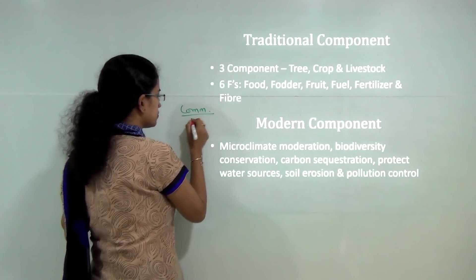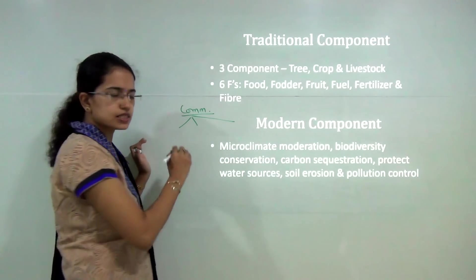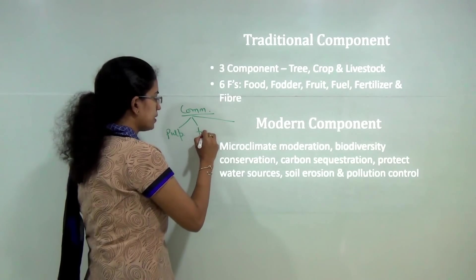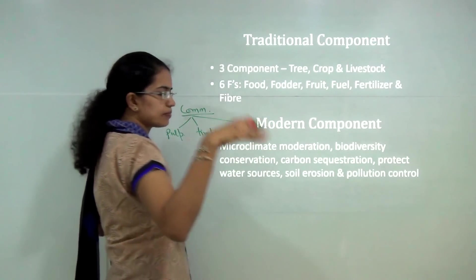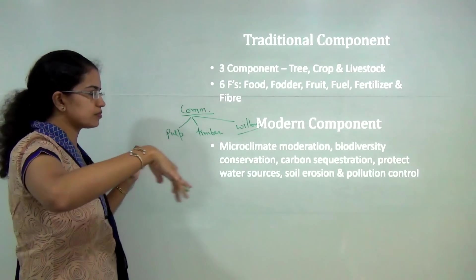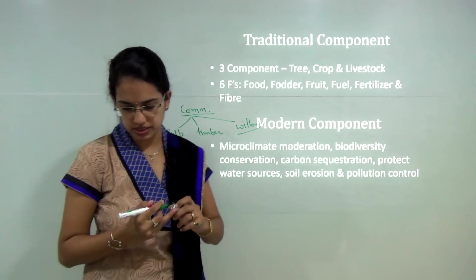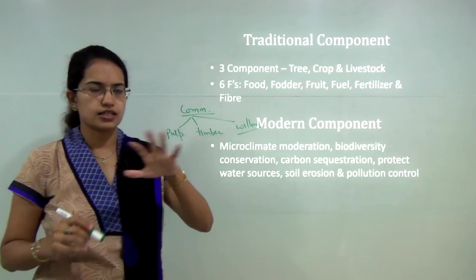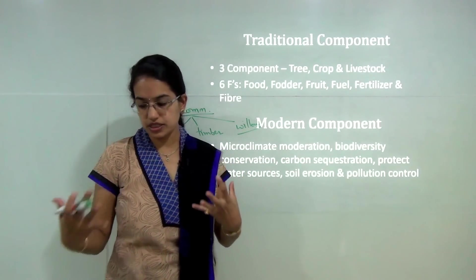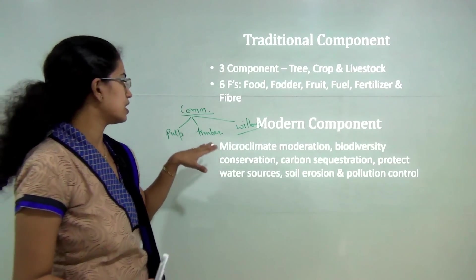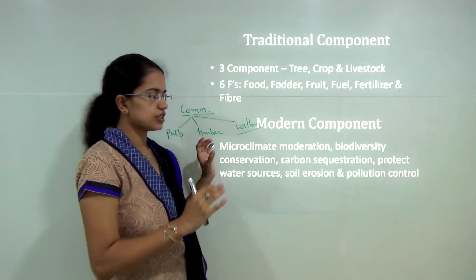Besides the traditional component, there is commercial agroforestry, which can be classified under three heads: pulp-based, timber-based, and willow-based. Willow-based is mainly found in the hilly areas of Jammu & Kashmir, Himachal Pradesh, and Uttarakhand. Pulp-based is mainly confined to Punjab, Gujarat, Haryana, Rajasthan, and Tamil Nadu. Timber-based involves trees grown for timber purposes in Kerala, Maharashtra, and most southern regions.